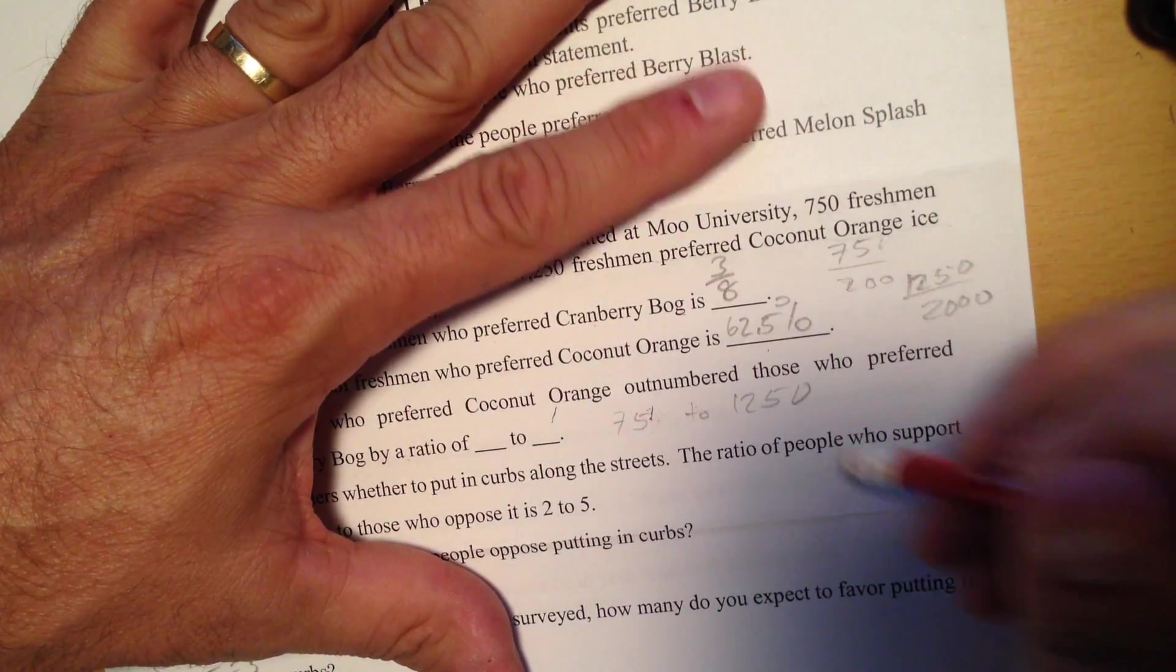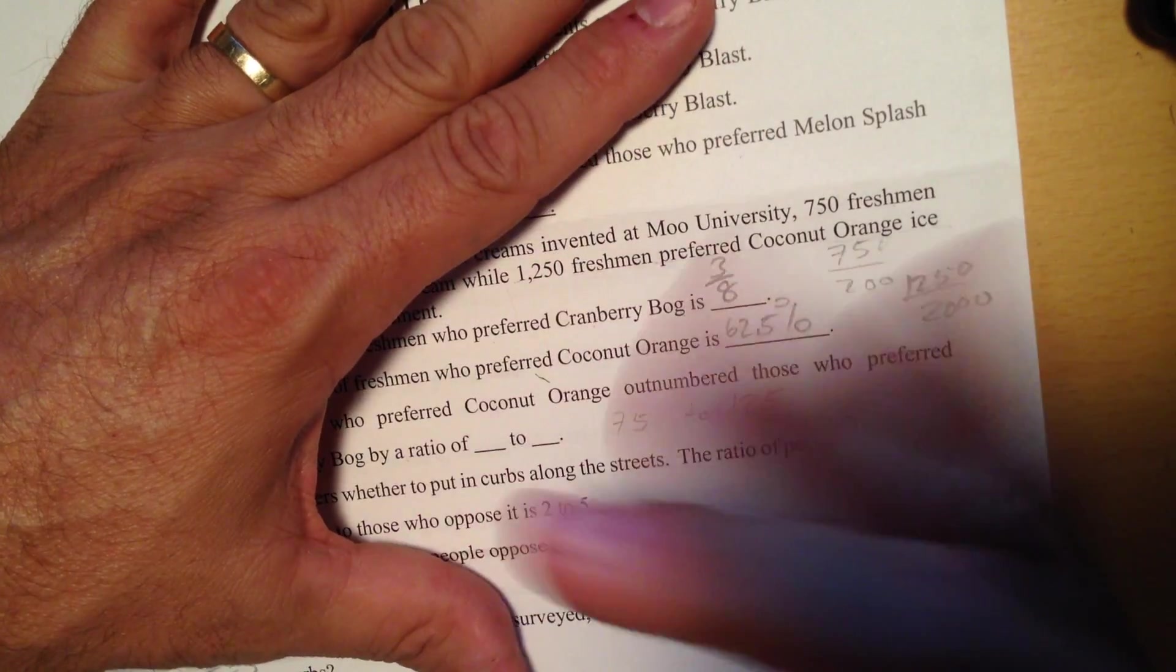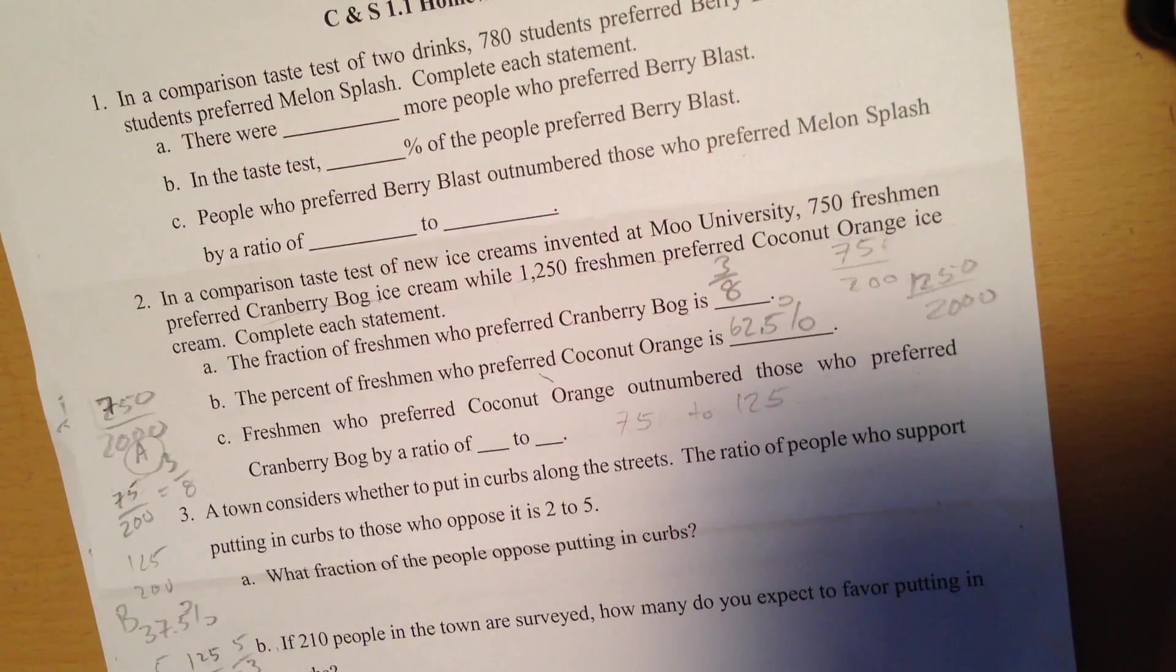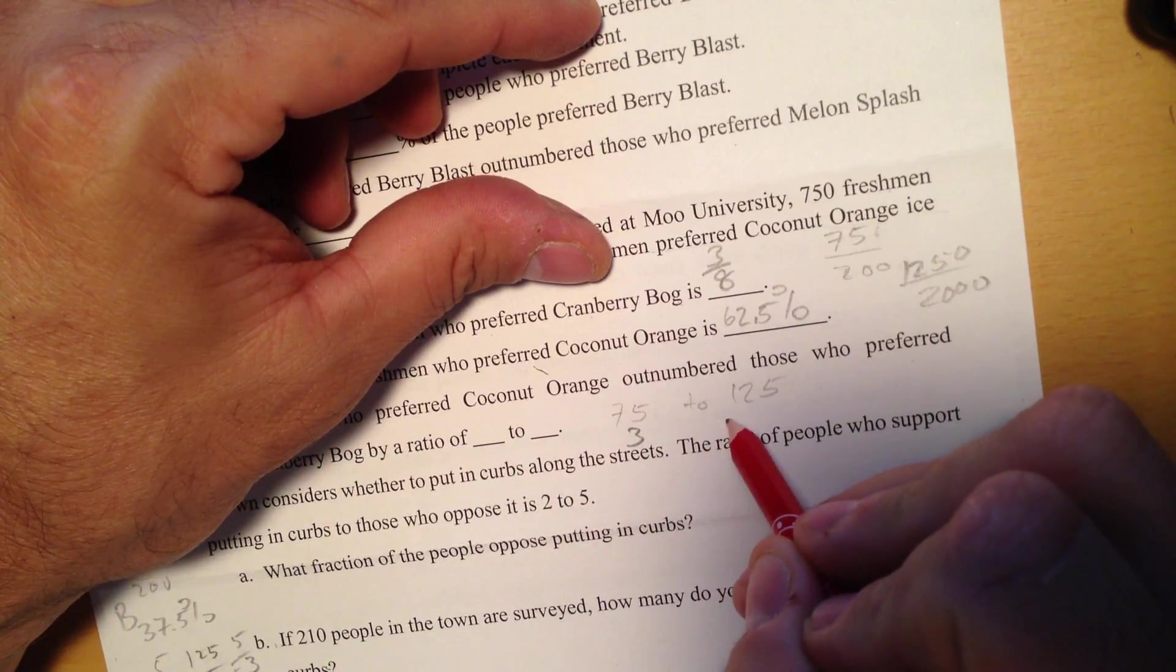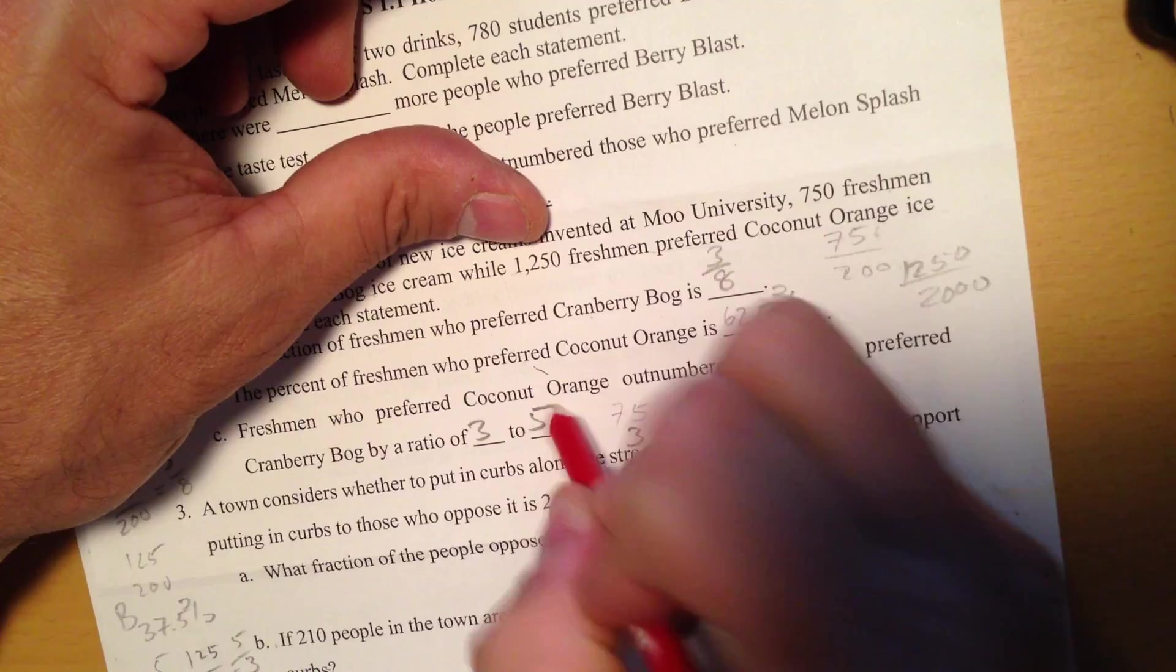I divide both by 10, I got 75 to 125, and then I'm right back to 25 goes into both of these. 25 goes into this 3 times and it goes into this 5 times, so the ratio is 3 to 5.